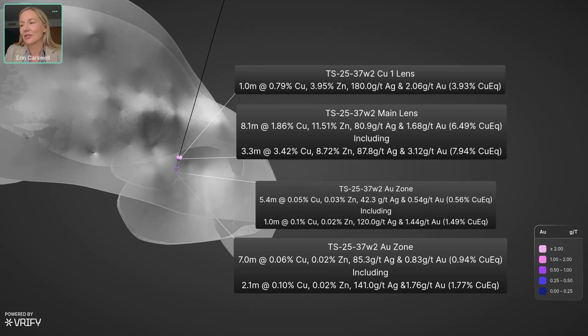So if you recall TS-37, it hit multiple thickened intersections over about 143 meters of really nice copper and zinc grades. 37 Wedge 1, hit a 70 meter intersection of beautiful continuous mineralization. And finally, we've got 37 Wedge 2, a little bit further down dip. And you can see here that it's come back down to kind of normal Tesla thicknesses here, but the grades are still fantastic.